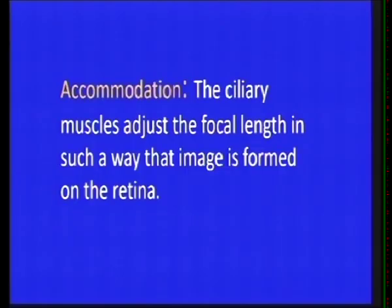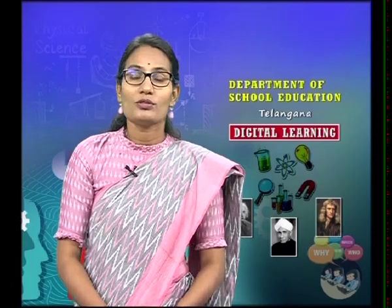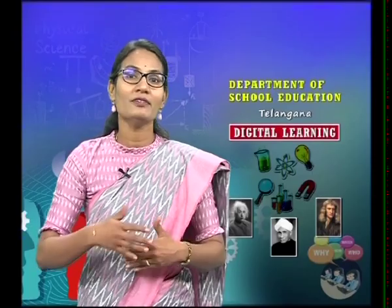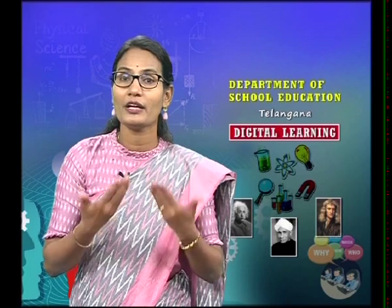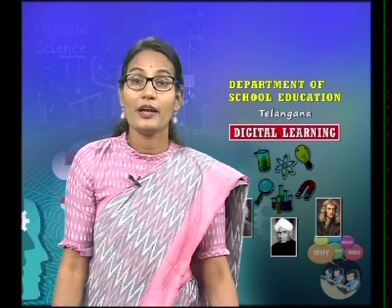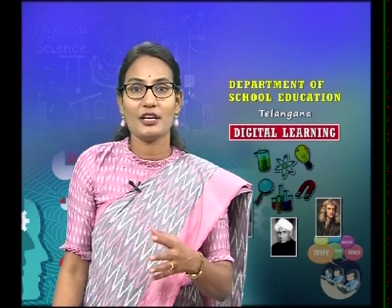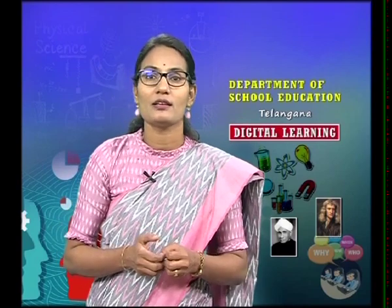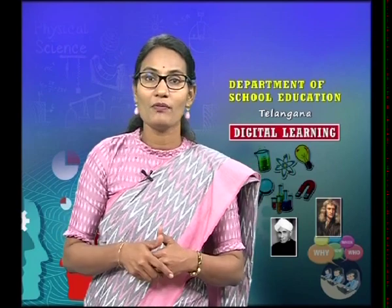The image formed on the retina is an inverted and real image. But the question is: if the image is inverted, how do we see objects upright? How can the human eye recognize color, shape, and size? The retina contains 125 million cones and rods. Cones identify color, while rods — the green oval-shaped cells — identify the intensity of light. These cones and rods receive signals and send them to the brain via the optic nerves.